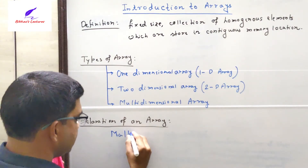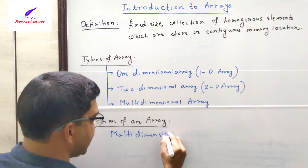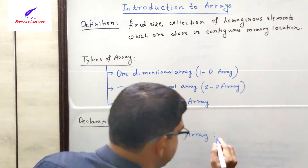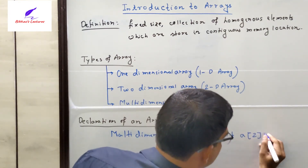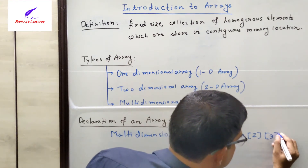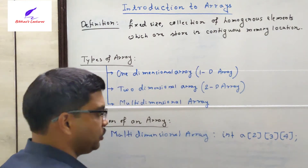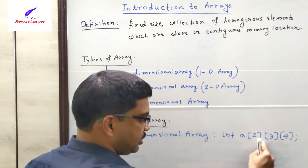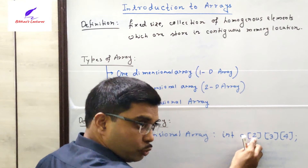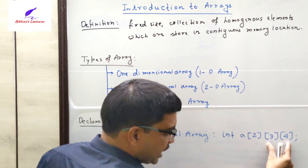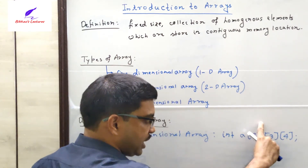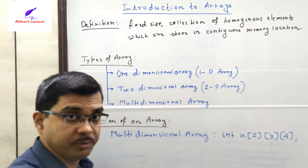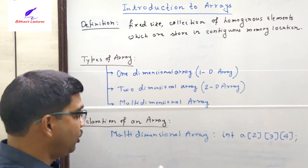The next one is multidimensional array. To declare a multidimensional array, for example: int a[2][3][4]. Here we have mentioned more than 2 dimensions. This multidimensional array is nothing but a collection of two 2D arrays, and each of those 2D arrays contains 3 rows and 4 columns. So as a whole, this 3D array will contain 2 × 3 × 4, that is 24 elements. This is the simple declaration statement for a multidimensional array.